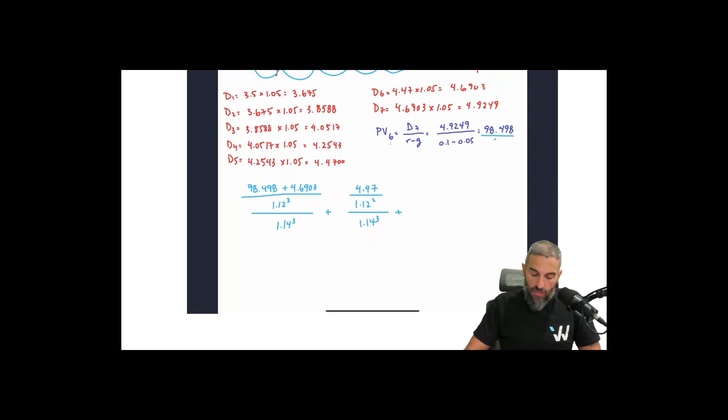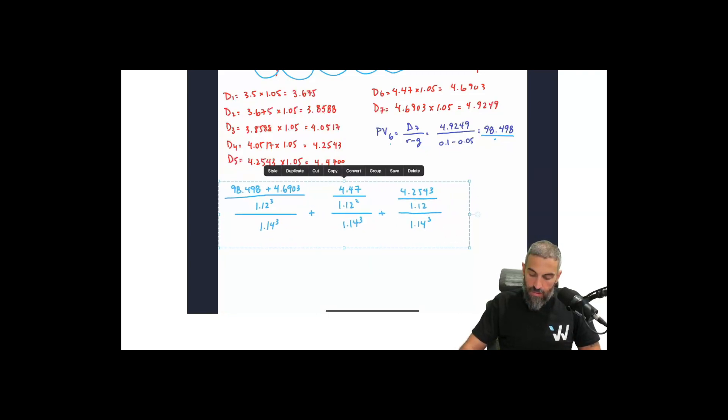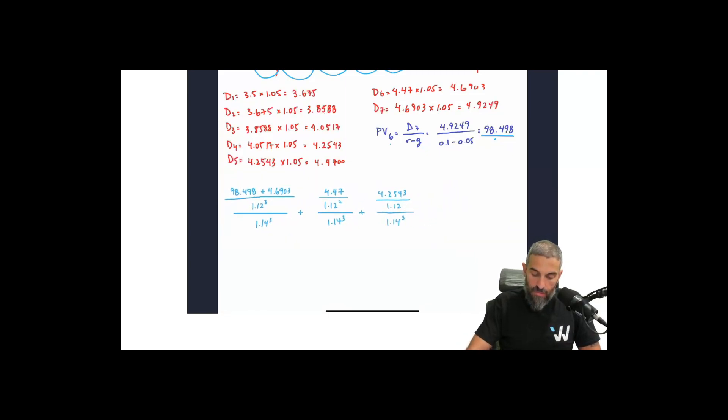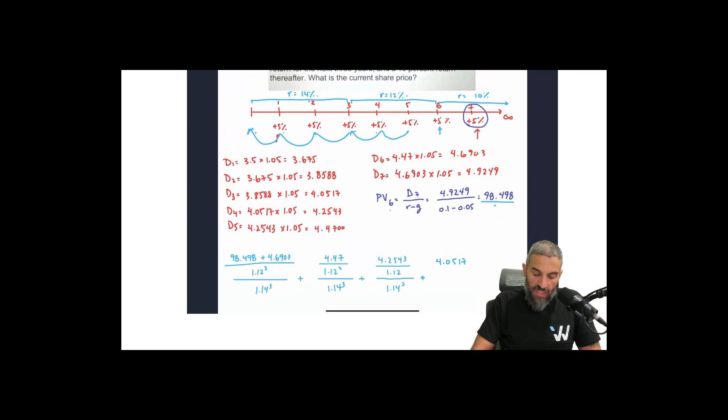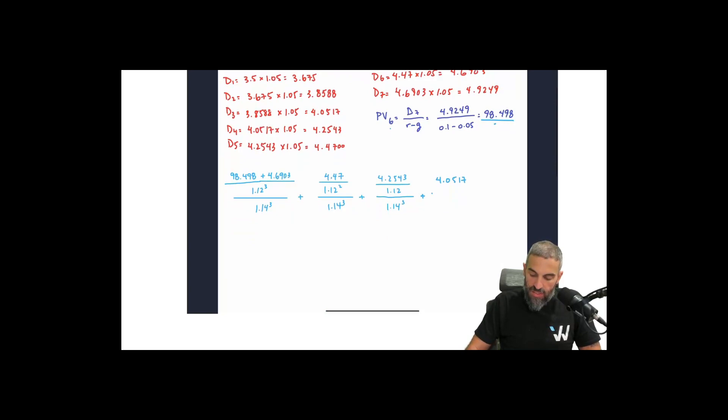And we're going to repeat that over and over again. So D4 now, 4.2543 divided by 1.12. So we're discounting it at 12% one time and then 14% three times. D3 is 4.0517. So this one now only needs to be discounted at 14%. We've reached this point of our timeline. So it's going to be discounted by 14% three times.